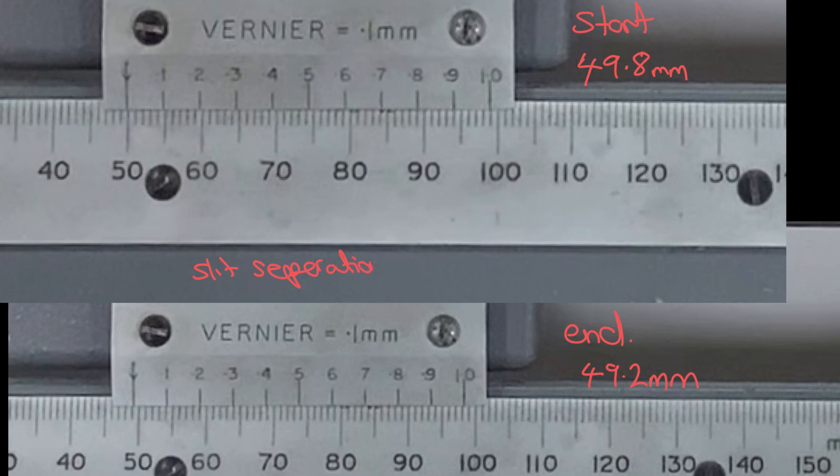So that gives me the slit separation of the difference between those two. So that would give me 49.8 minus 49.2, which would give me 0.6 millimeters. And they were labeled as 0.5 millimeters, and that's not too bad.